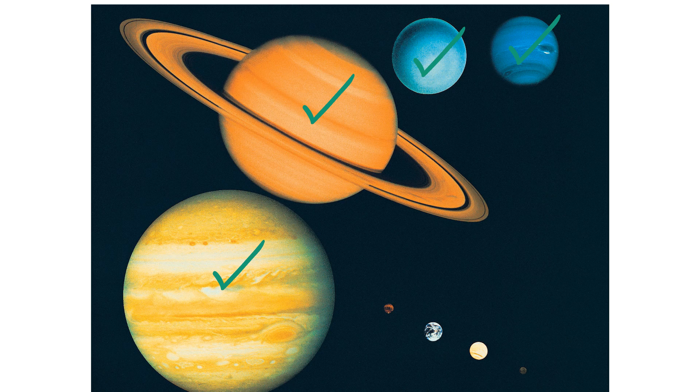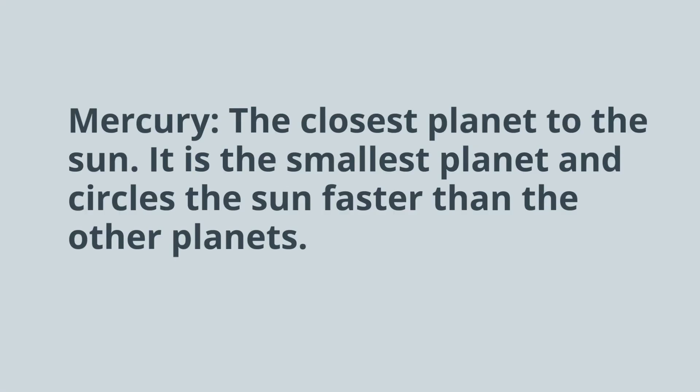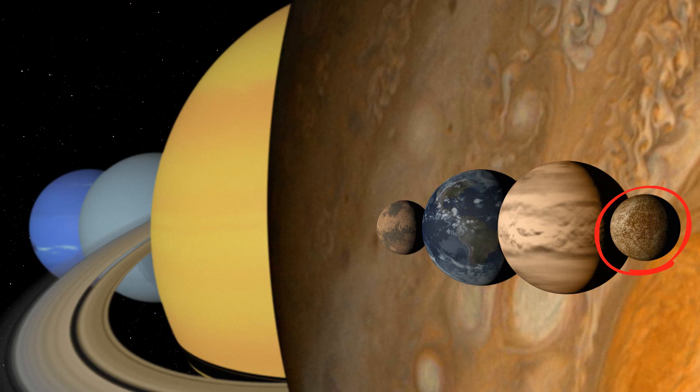Next, we have Mercury, the closest planet to the sun. It is the smallest planet and circles the sun faster than the other planets. That's why its name is Mercury. And here's a look at Mercury.